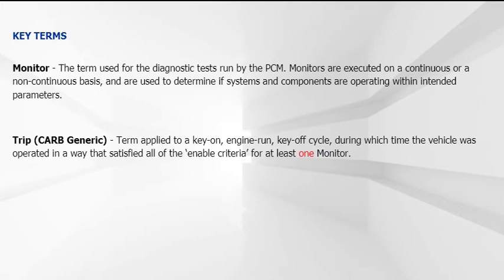A trip in the federal generic form is the term applied to a key-on, engine-run, key-off cycle, during which time the vehicle was operated in a way that satisfied all of the enabled criteria for at least one monitor.